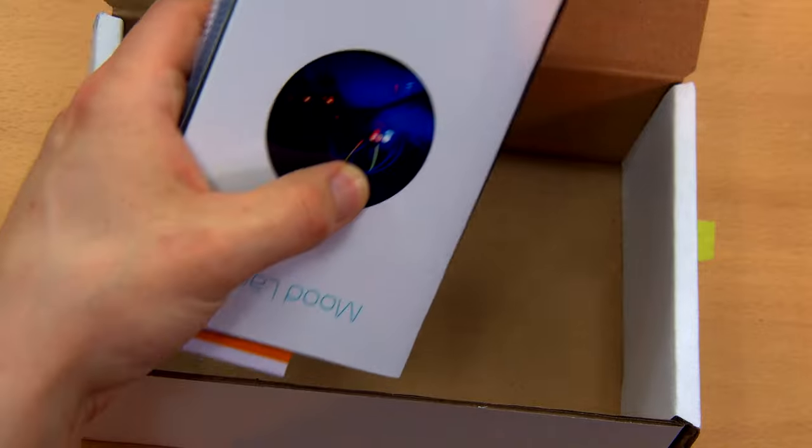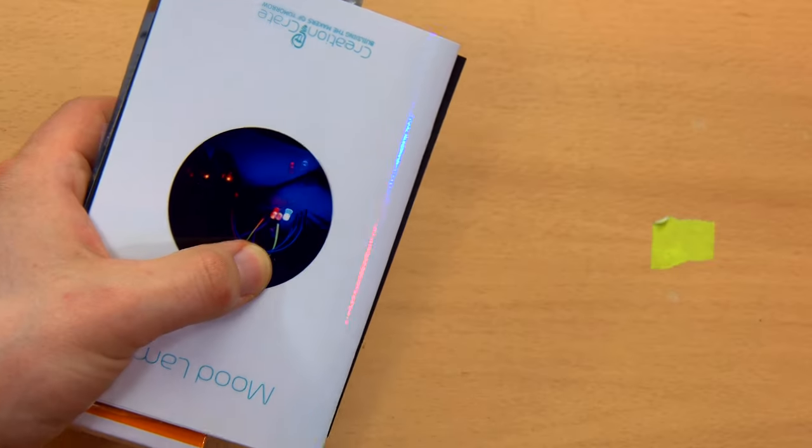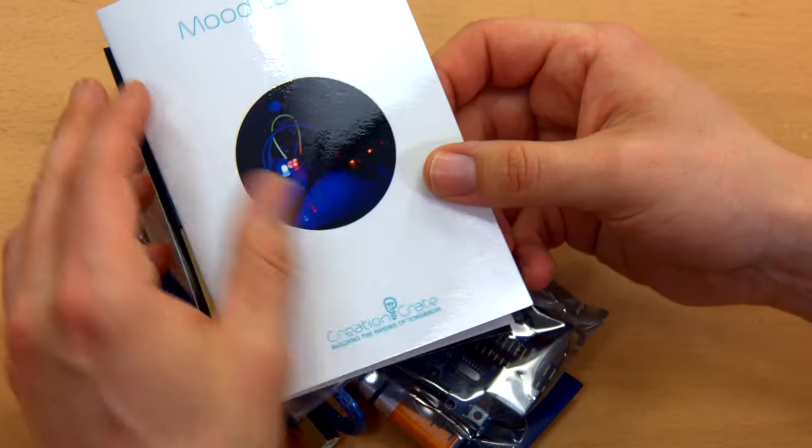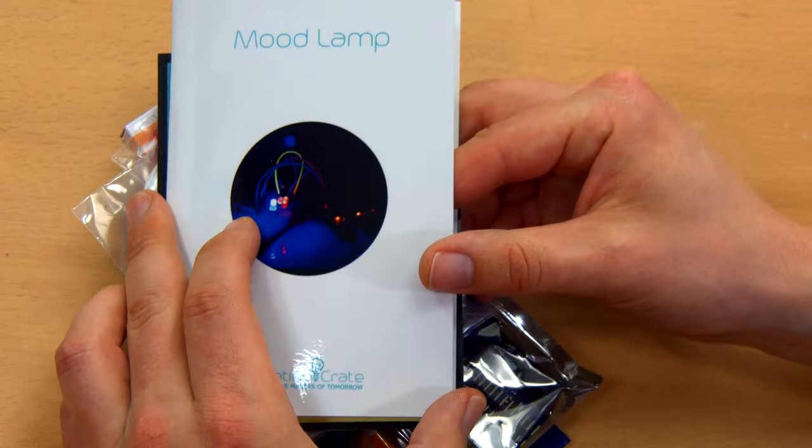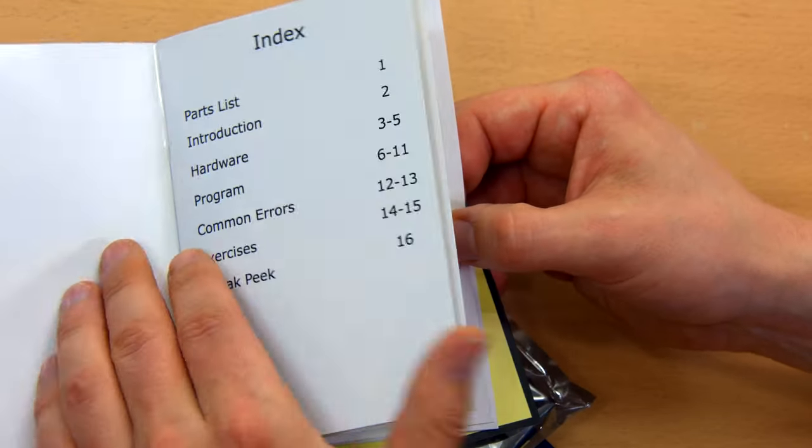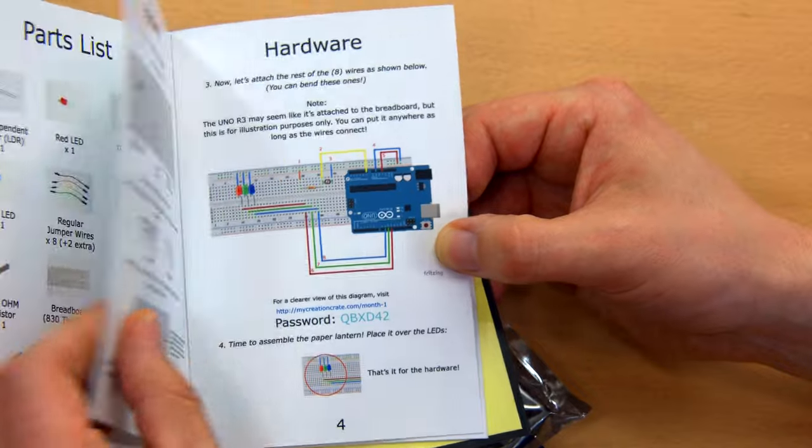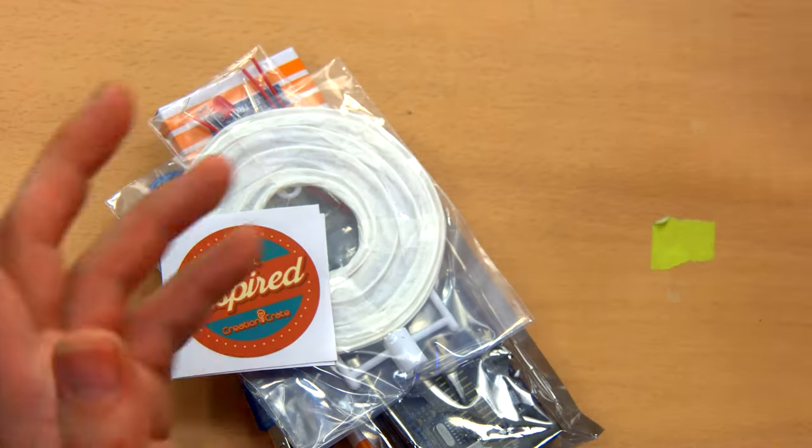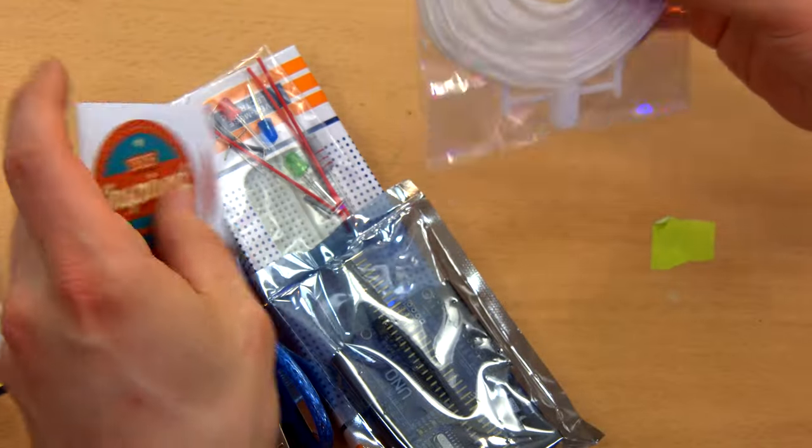So this comes in a pretty plain white box and inside, nicely bubble wrapped, we have - the project is a mood lamp. And it comes with a nice set of directions. This is the first time I'm opening this. I'll just run through what's inside really quickly, then I'm going to set it all up and build the project for you all to see.